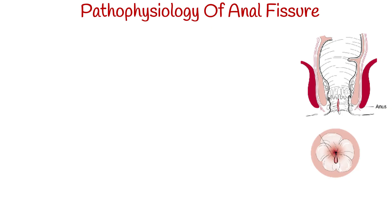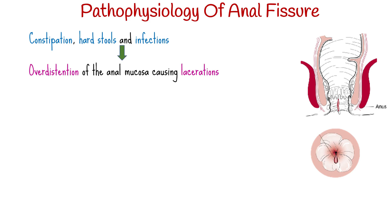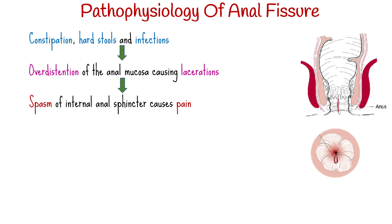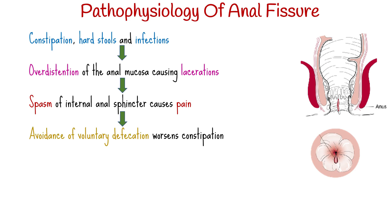How does anal fissure occur? Constipation, passing of hard stools, and infections can lead to over-distention of the anal mucosa, causing lacerations of the epithelium lining the anal canal. With each bowel movement, spasm of the exposed internal anal sphincter causes pulling along the laceration, which slows healing and worsens the extent of the laceration. The resulting pain causes voluntary defecation avoidance and constipation, worsening anal mucosa distention.